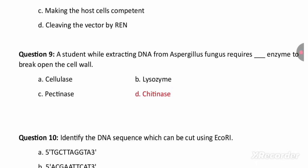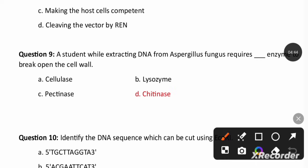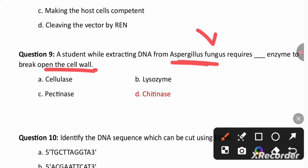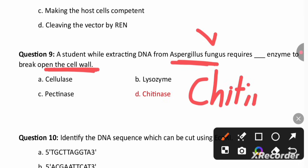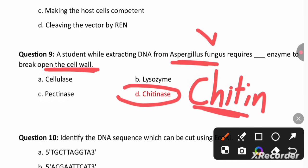A student extracting DNA from Aspergillus fungus requires an enzyme to break the cell wall of the fungi. The cell wall of fungi is made up of a polysaccharide called chitin. To break chitin, we need the enzyme chitinase.